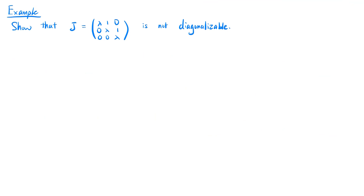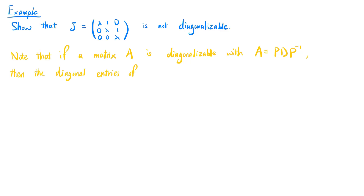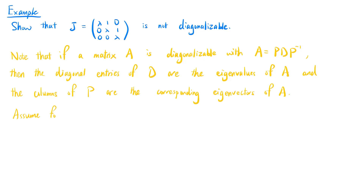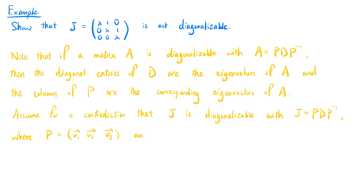Let's look at an example. Suppose we want to show that the matrix J equals [λ, 1, 0; 0, λ, 1; 0, 0, λ] is not diagonalizable. Note that if a matrix A is diagonalizable with A equals P times D times P inverse, then the diagonal entries of D are the eigenvalues of A, and the columns of P are the corresponding eigenvectors of A. Assume for a contradiction that J is diagonalizable with J equals P times D times P inverse, where P is the matrix with columns v1, v2, v3, and D is the diagonal matrix with diagonal entries λ1, λ2, λ3.